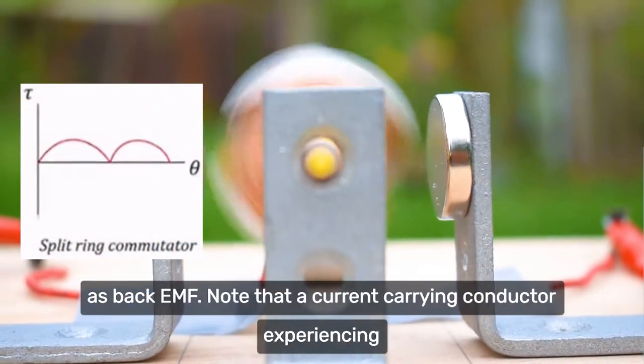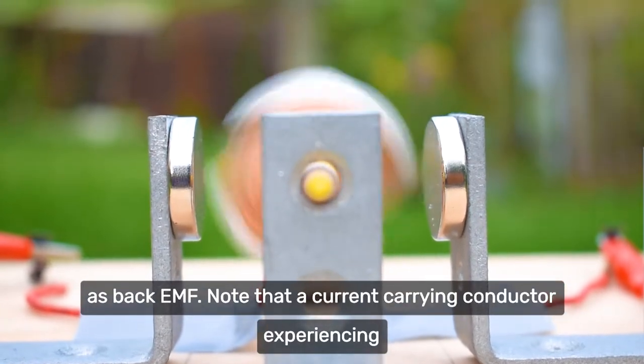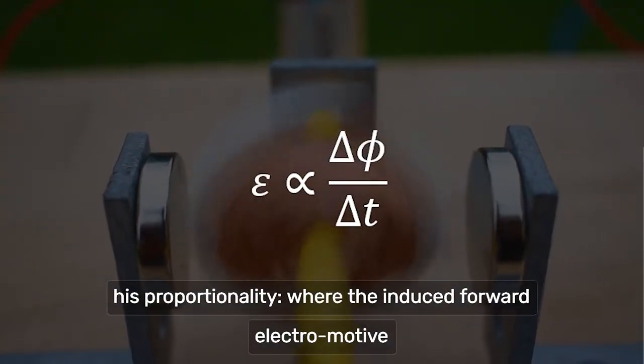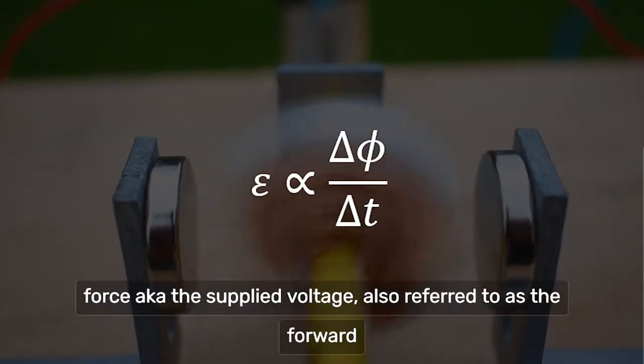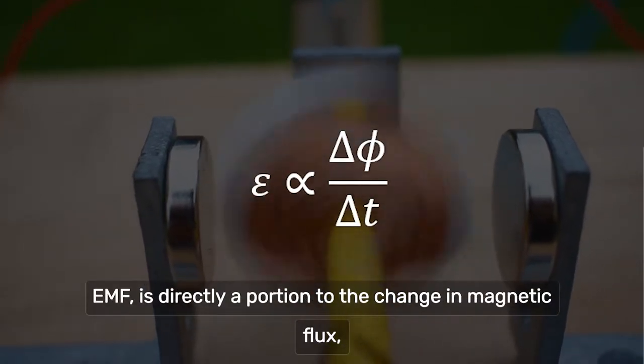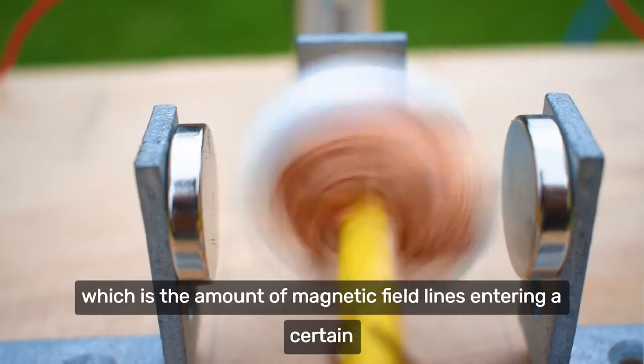Now, discussing the phenomena known as back EMF. Note that a current carrying conductor experiencing an external magnetic field will follow Faraday's law and its proportionality, where the induced forward electromotive force, aka the supplied voltage, also referred to as the forward EMF, is directly proportional to the change in magnetic flux, which is the amount of magnetic field lines entering a certain area.